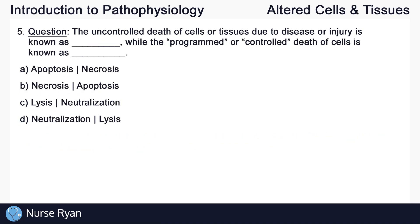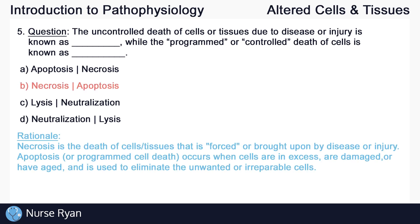Question number 5: the uncontrolled death of cells or tissues due to a disease or injury is known as blank, while the programmed or controlled death of cells is known as blank. The answer is B — necrosis and apoptosis. Necrosis is the death of cells or tissues that is forced or brought upon by disease or injury, while apoptosis, or programmed cell death, occurs when cells are in excess, are damaged, or have aged, and is used to eliminate unwanted or irreparable cells.